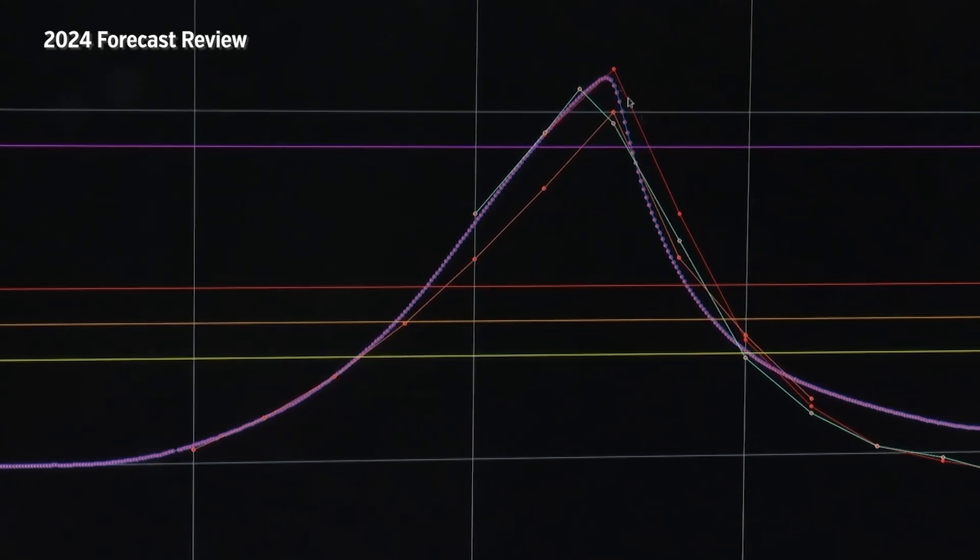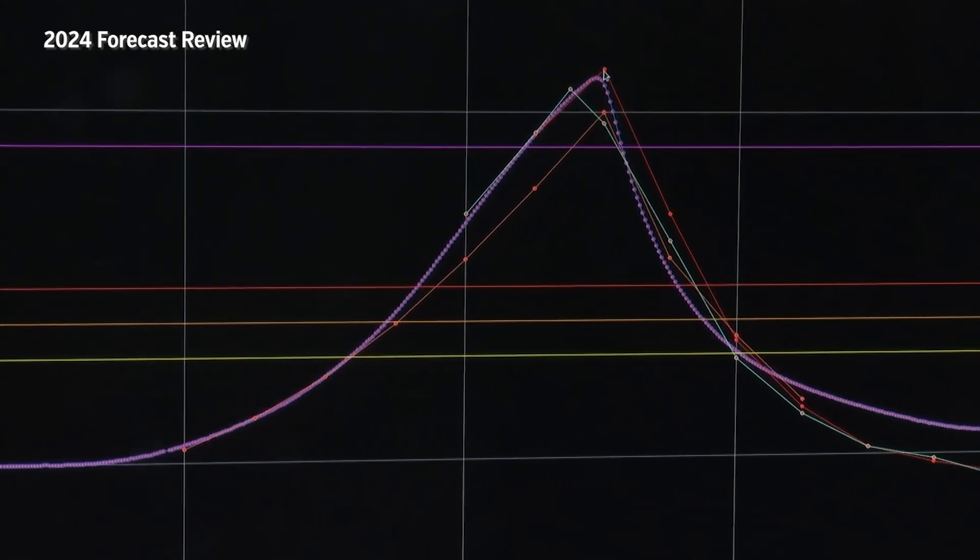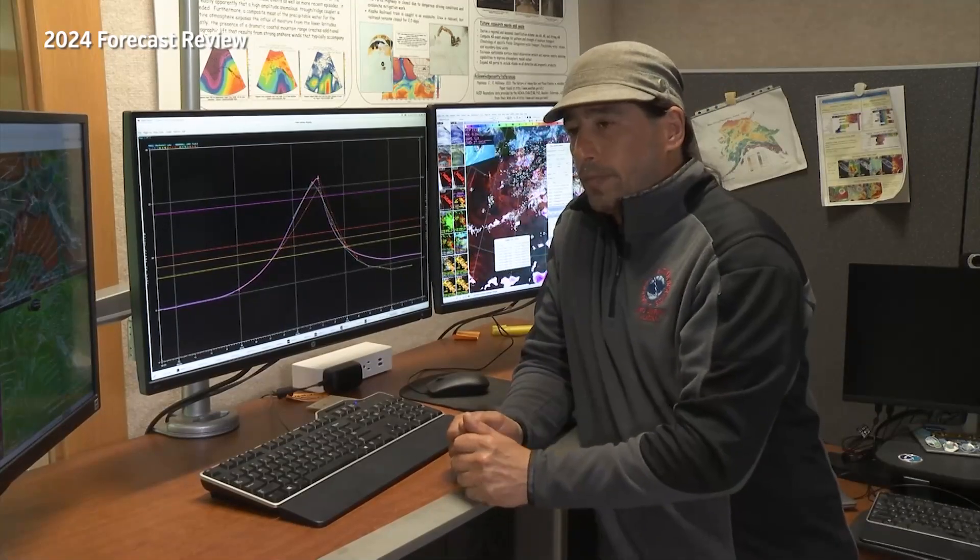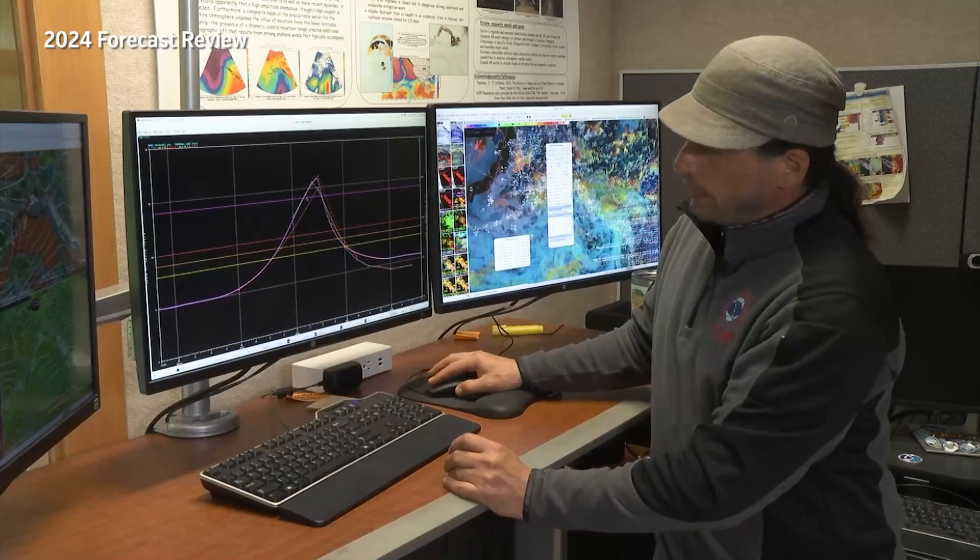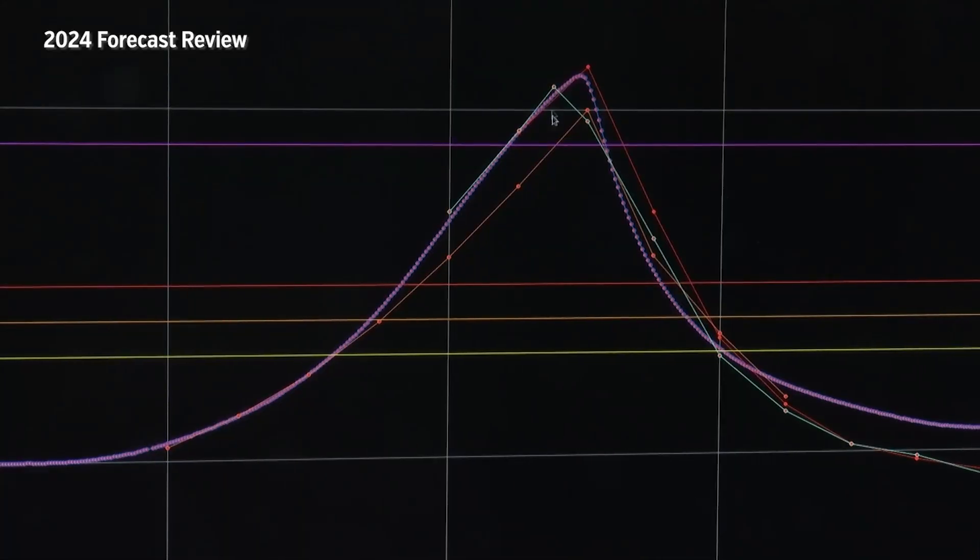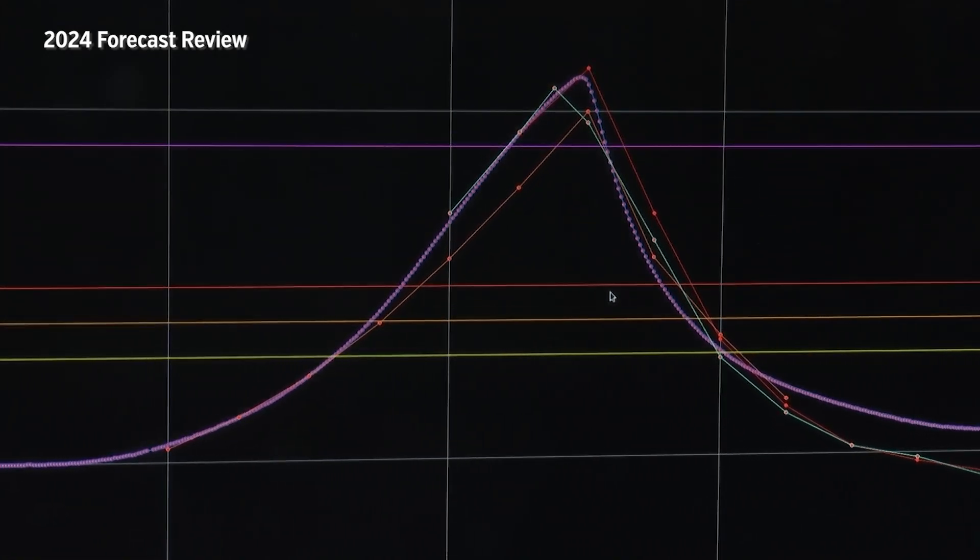Once you start seeing this drop in the Mendenhall Lake river gauge, 15 to 45 minutes, depending on where you're at on the river, is when you will start seeing that water really going down. You can see how fast that water level receded, but we're still all this time above this red line.